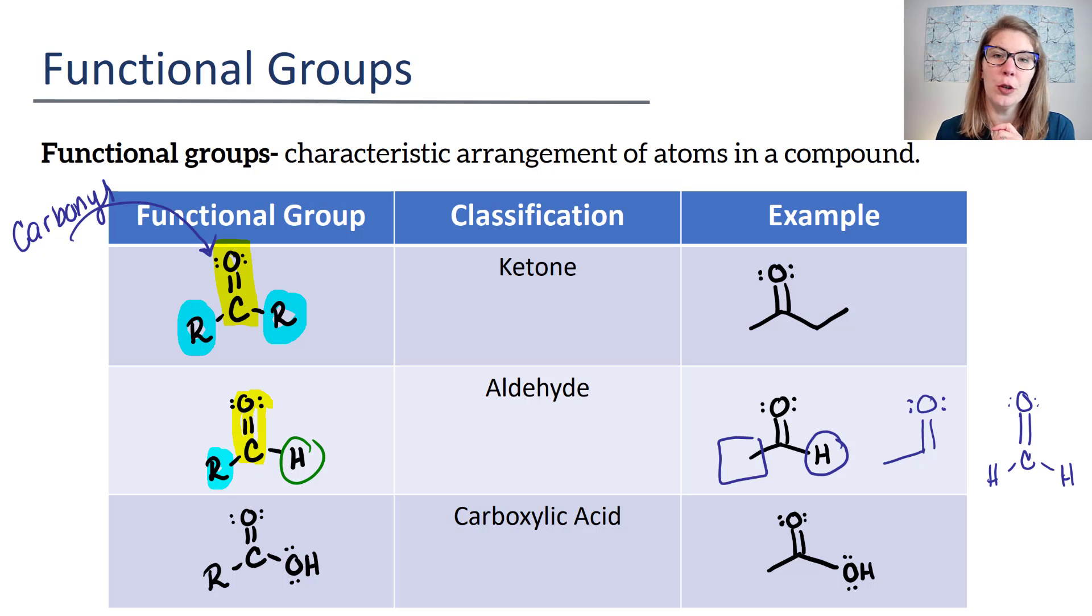Finally, our last functional group we're going to talk about is a carboxylic acid. Notice that we still have a C double bond O. We have an R group on one side. And then on the other side, we have an OH.